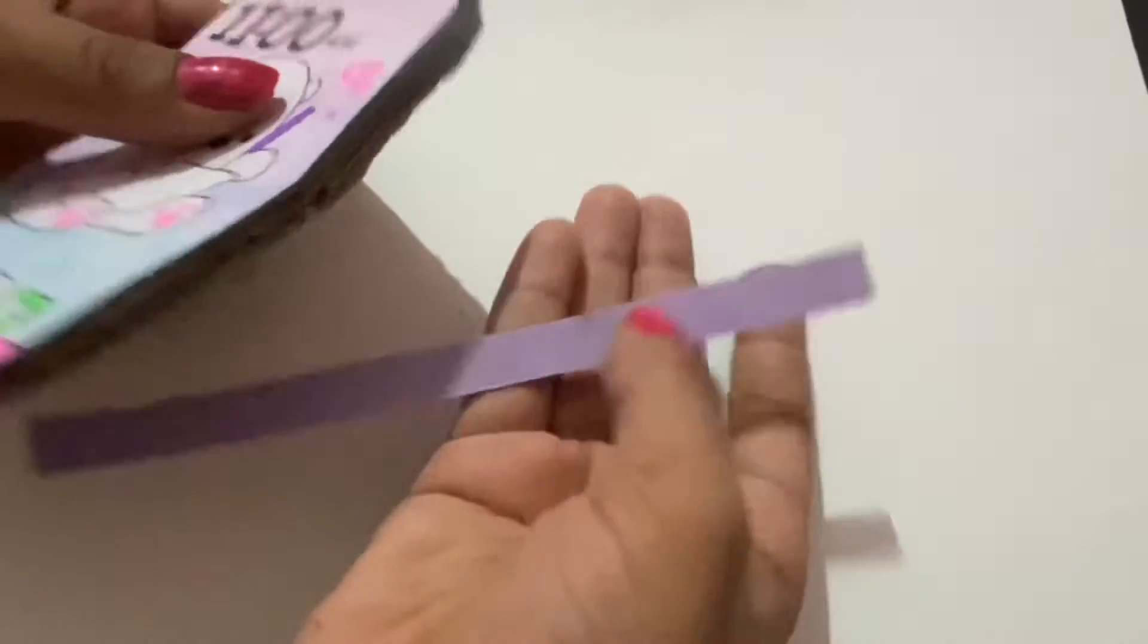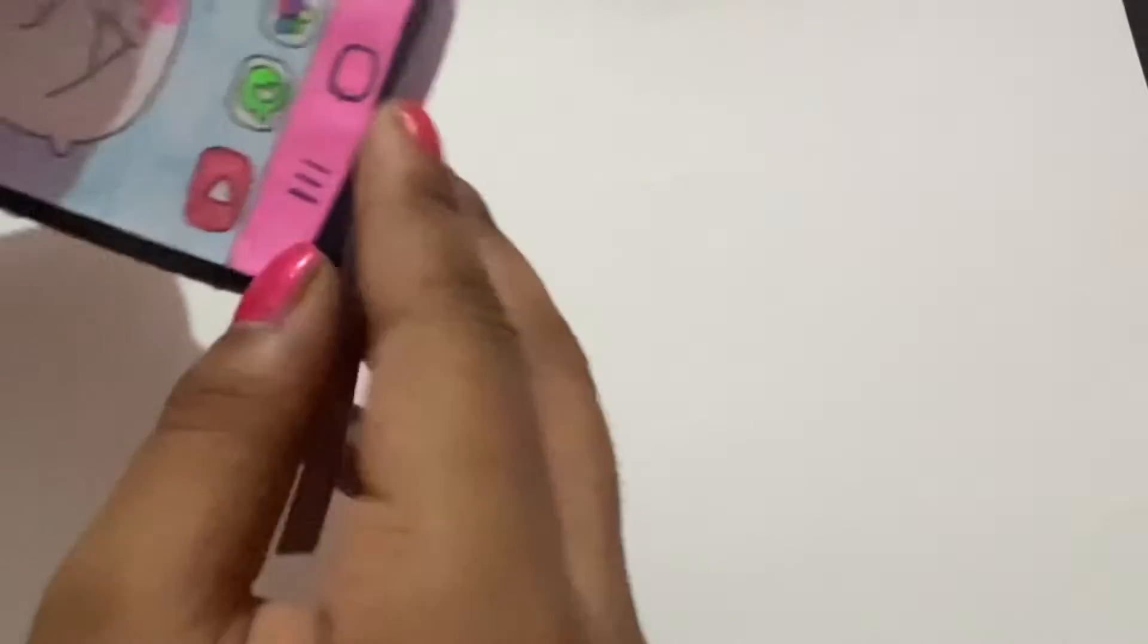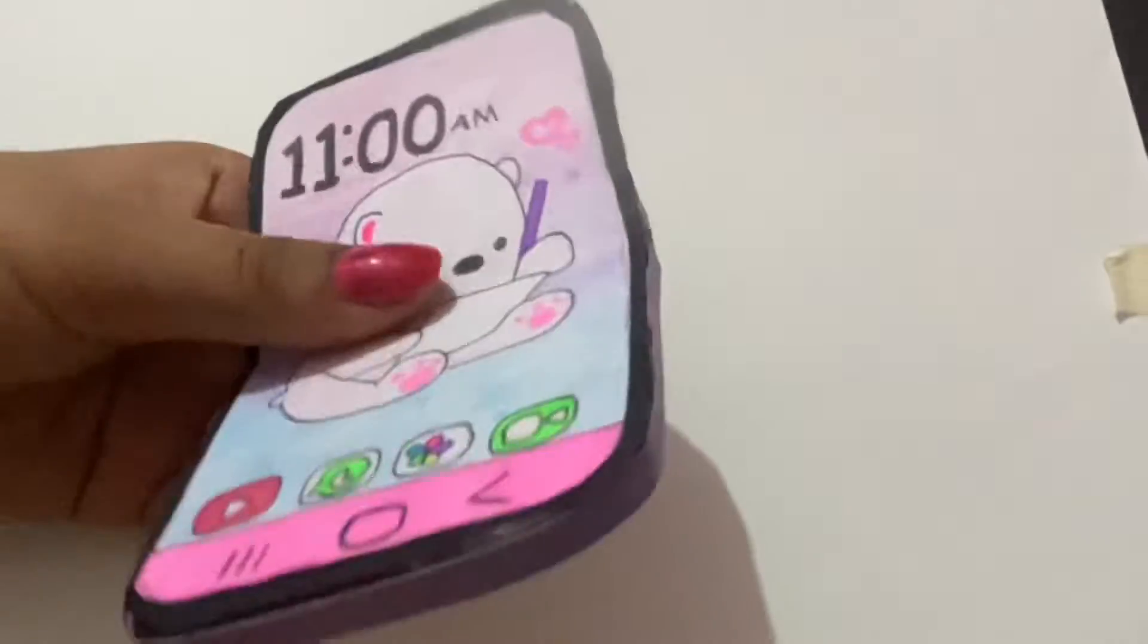Now let's start making the outside. You're going to need strips of the purple you're going to use - I'm using a light lavender color. You want to pull it around the phone but only one half. I did the bottom half.